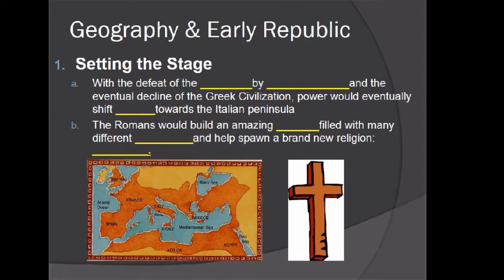Setting the stage: with the defeat of the Persians by Alexander and the eventual decline of Greek civilization, power would eventually shift west towards the Italian peninsula. The Romans would build an amazing empire filled with many different cultures and help spawn a brand new religion, Christianity. After Alexander conquered Persia and after his death, we had Greece, where we left off in our last unit. After the fall of Greece and Hellenistic culture, Rome started to take a more influential role in the Mediterranean region.